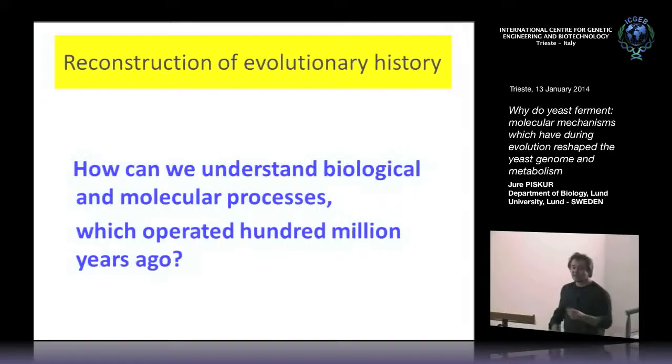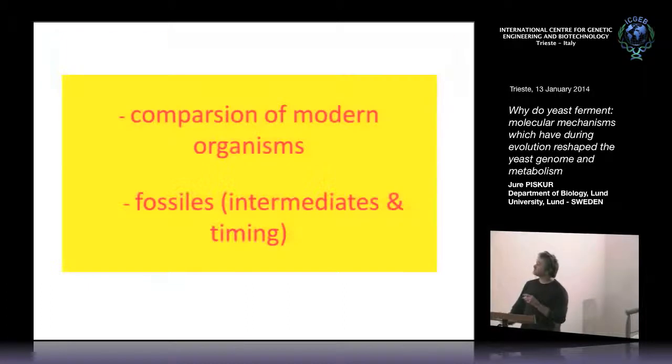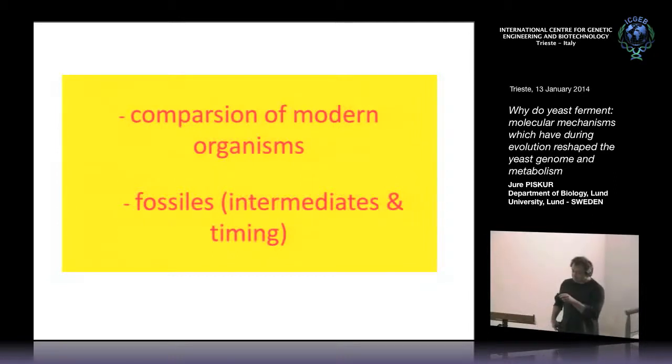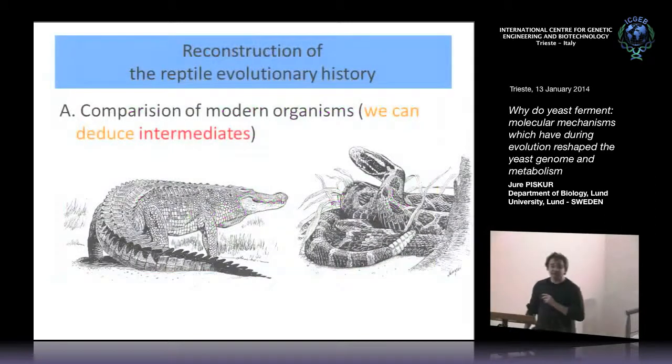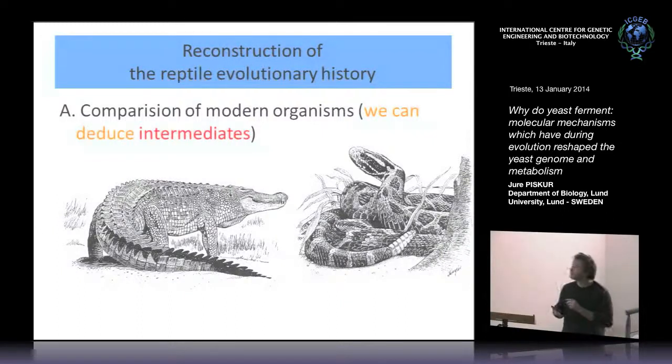We'll talk about evolutionary history now and yeast is my model. I've been trying to understand biological and molecular processes which operated hundreds of millions of years ago. I'm especially interested in events 100 to 150 million years ago. How do we reconstruct the things? One is by comparing modern organisms, and fossils help because they tell us evolutionary intermediates and contribute timing. To make things easier we'll start with reptiles because things are easier to illustrate than with yeast.